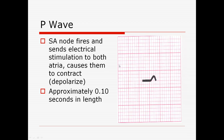The P wave is your atria firing. The SA node fires, sends an electrical impulse through the atria, and causes them to contract — this is called depolarization. When the cells reset to prepare for the next beat, with electrolytes rushing back in, that is called repolarization. The T wave is the repolarization of the ventricles. The P wave should be approximately 0.10 seconds in length — on the isoelectric line you see a small bump representing atrial contraction.